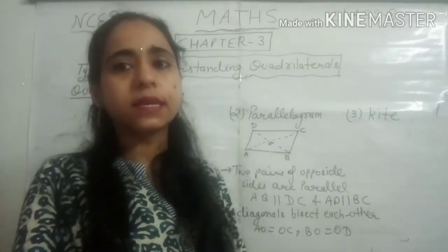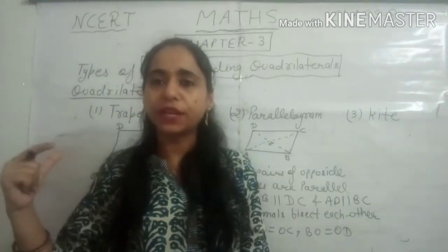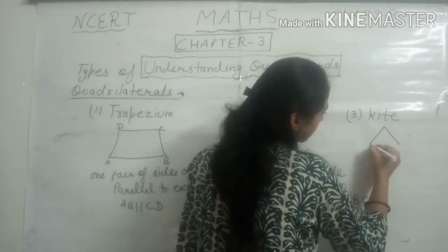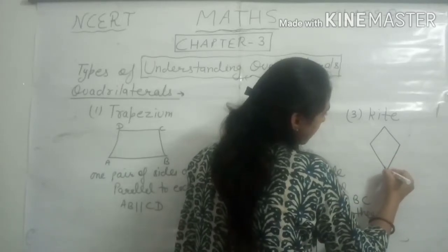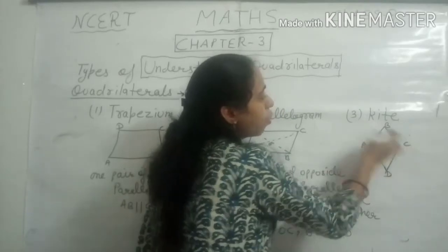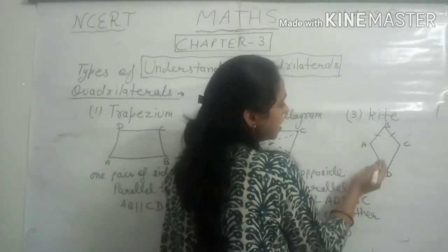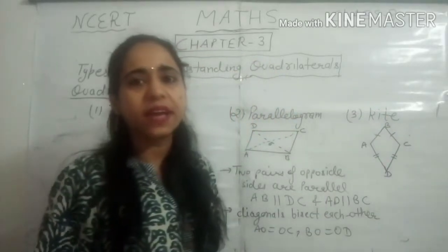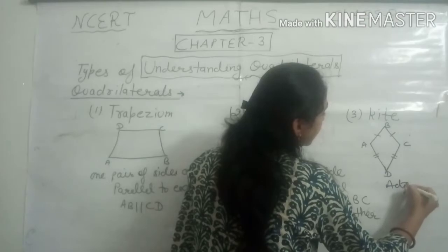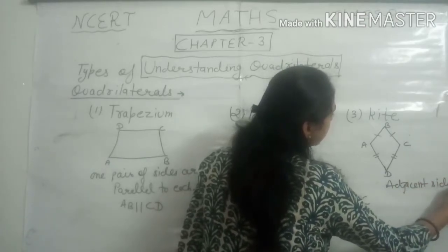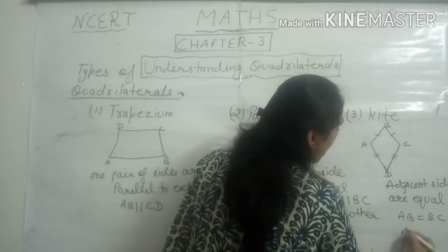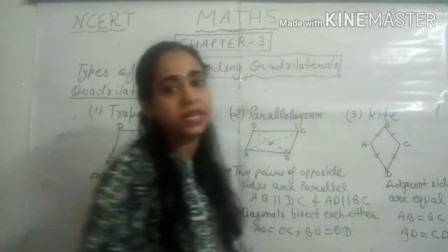The third type is a kite. Kites are a special type of polygon in which adjacent sides are equal. For kite ABCD, AB and BC are adjacent sides, and AD and CD are adjacent sides. So the property is: adjacent sides are equal — AB equals BC, and AD equals CD.